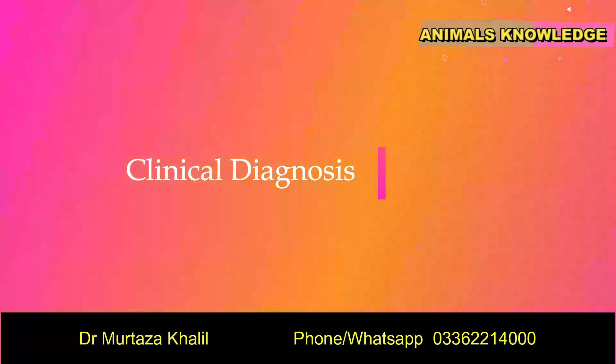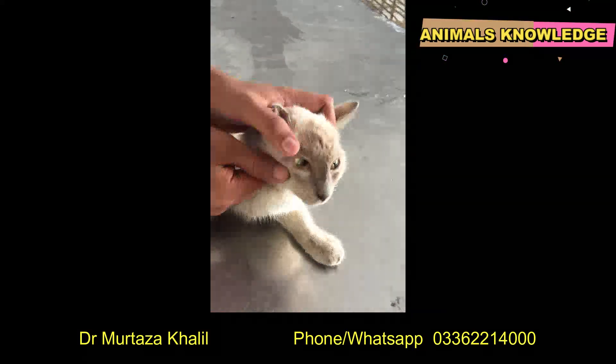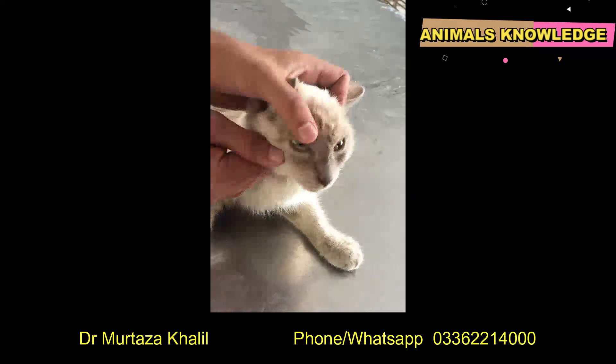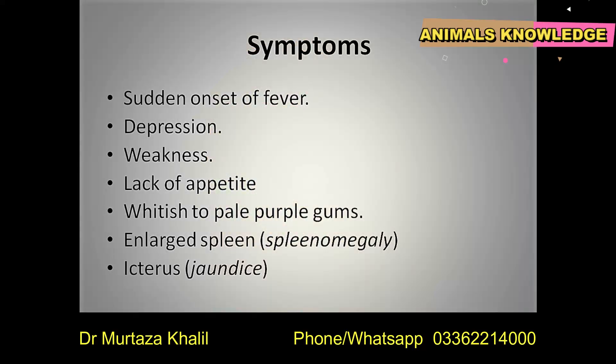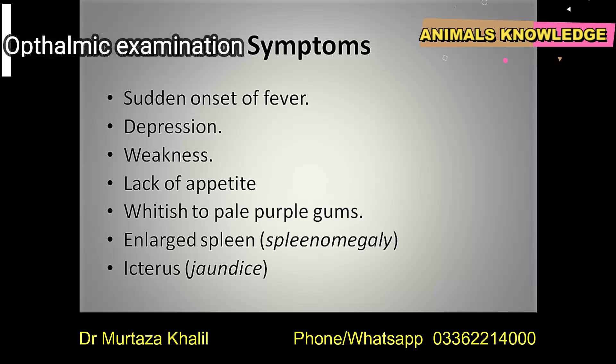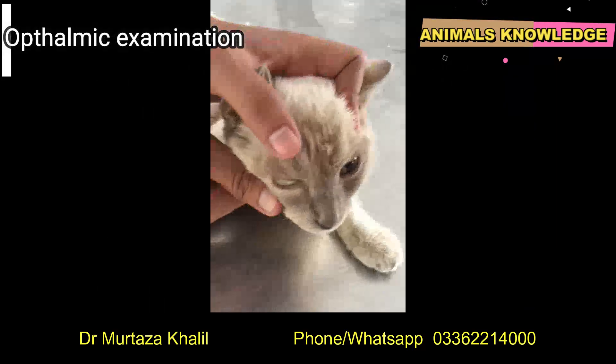Now let's see the clinical diagnosis of the cat. There is a sudden onset of fever and whitish to purple gums, lack of appetite, weakness, and depression. There is also an enlarged spleen, which represents splenomegaly, and lastly icterus or jaundice, because in this disease the bile secretion and liver are affected.